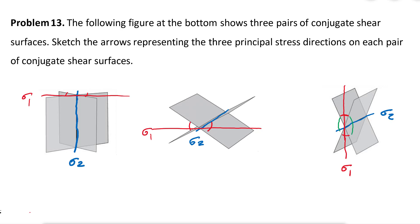The other angle is the obtuse angle, shown here with the green line. We can draw a line that bisects this obtuse angle, and that is always going to be Sigma 3. This holds regardless of which direction our two conjugate fractures are oriented — the bisector of the obtuse angle is always Sigma 3. We know this as Anderson's rule.